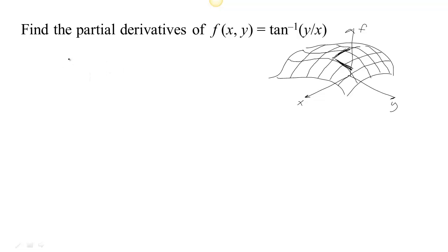Our notation looks different depending on whether we're using Leibniz notation or notation akin to Newton's notation. If we want to take the derivative of a function with respect to x while holding the other variables constant, instead of using the usual d for difference or change, our d will be a little Cyrillic d. We use a slightly different d to indicate there are other things that could be changing with this function, but we're only considering how f changes as you change one particular input x.